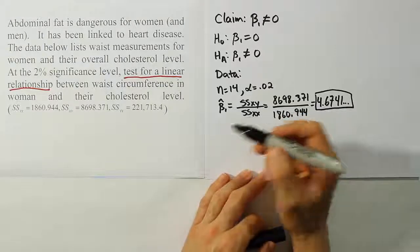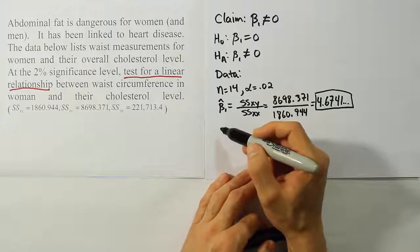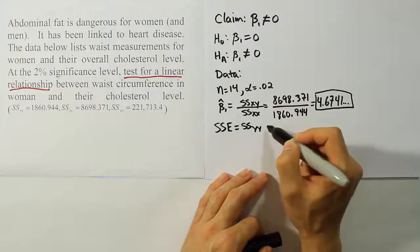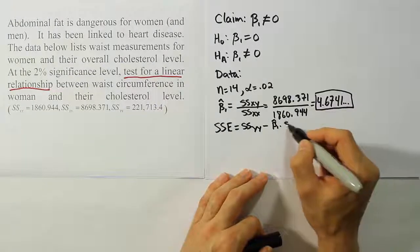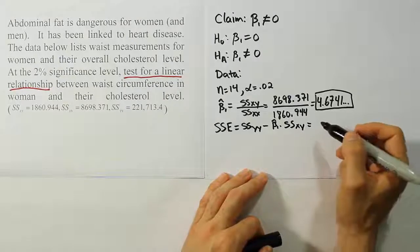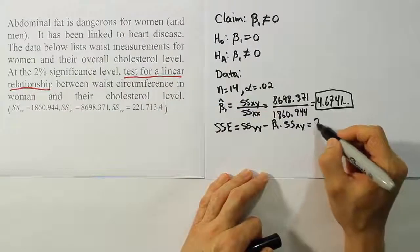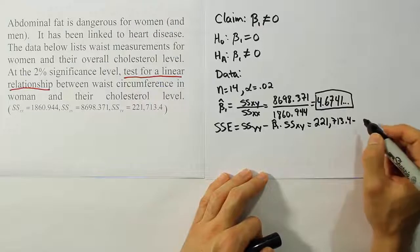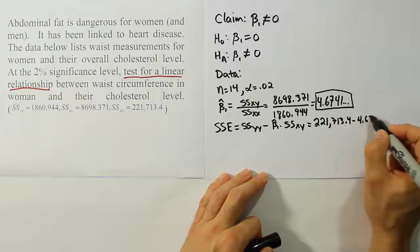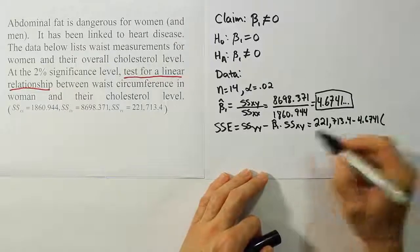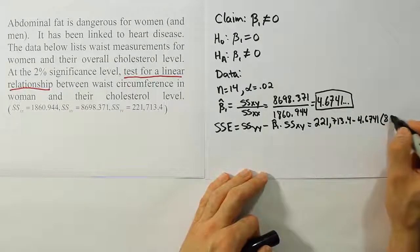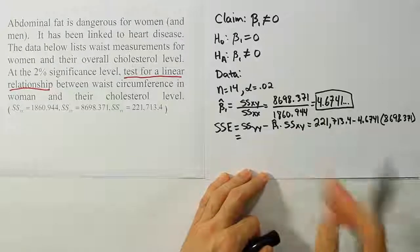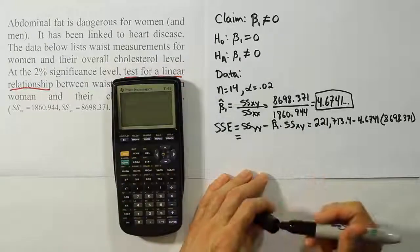For the next part of the problem, I want to calculate my sum of square for errors, my SSE. That SSE is SSYY minus the slope estimate beta 1 times SSXY, the mixed term. Let's plug in the Y values. It's going to be 221,713.4 minus the number we just got above, which is 4.6741, times the mixed term, which is 8,698.371. Once we're done with all that, we'll have an answer for the sum of square for error.